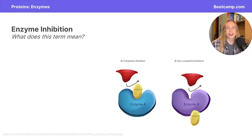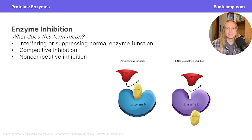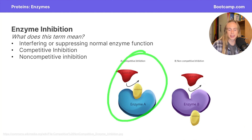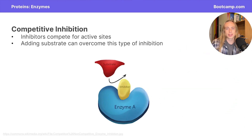Next we're going to talk about enzyme inhibition. Whenever we're inhibiting something, we're trying to stop it, so enzymatic inhibition is just trying to slow down or hinder the progress of an enzyme. We're going to talk about two different types of inhibition: competitive inhibition and non-competitive inhibition.